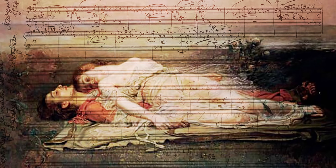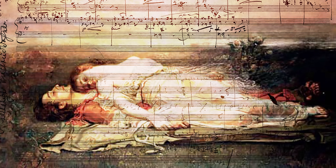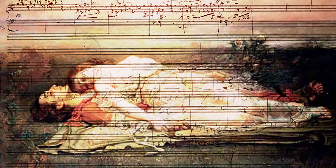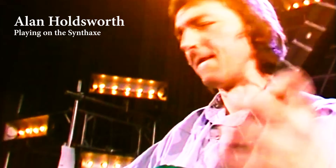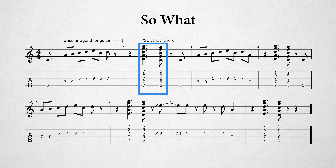Quartal harmony has come a long way — from the first occurrence in the form of a Tristan chord in the opera Tristan and Isolde, composed by Richard Wagner in the 19th century, to the modern jazz, fusion, and rock of our 21st century. A very famous instance and great example of a modern quartal chord is the So What chord, named after the song wherein it was used, composed by Miles Davis and Bill Evans, who were early users of quartal harmony in jazz.